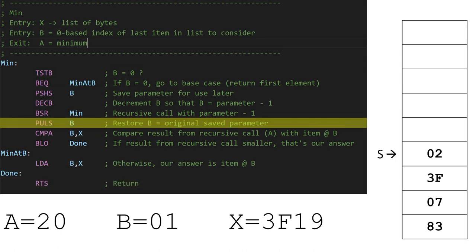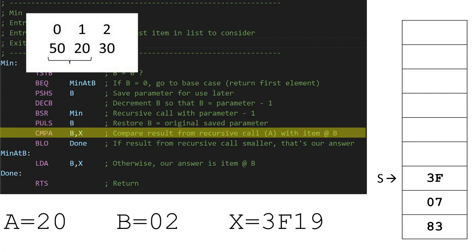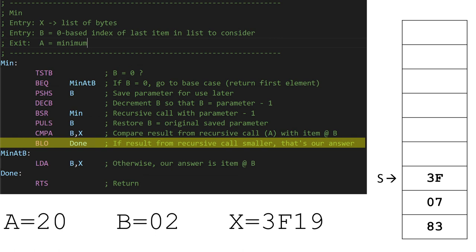Now we're back to the next most recent call to min, and now it's time to restore its copy of B from the stack, which is 2. Now compare what the recursive call just returned, which is 20, with the item at index 2, which is 30. 20 wins, so A already has the correct answer, and we can immediately skip down here and return.